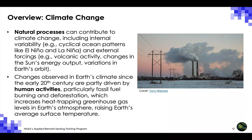Natural variability and climate fluctuations have always been part of Earth's history. The Earth has gone through warming and cooling phases in the past, long before humans were around. Natural processes can contribute to climate change, including internal variability such as cyclical ocean patterns like El Niño and La Niña, and external forcing such as volcanic activity, changes in the sun's energy output, and variations in Earth's orbit. However, their influence is too small or too slow to explain the rapid warming seen in recent decades.